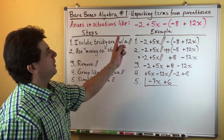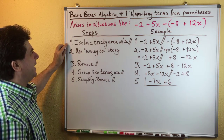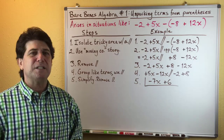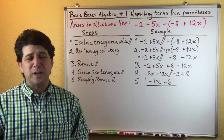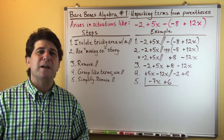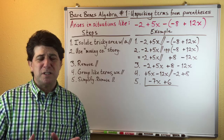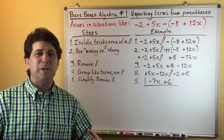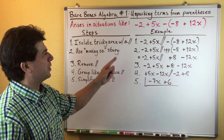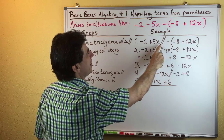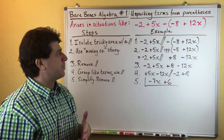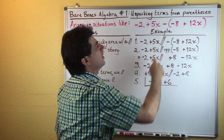We start out with the problem in red. The first step is to isolate the tricky area with what I call a double slash — a symbol I created through tutoring as a means of separating two parts of a mathematical expression. Students so often let two parts of an expression blend together when they shouldn't, so the double slash is installed right after the 5x, separating out the negative sign and the quantity in parentheses so we can work with it separately.